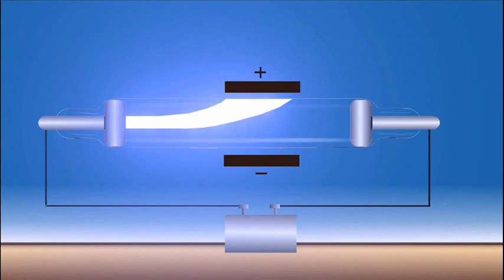When an electric field is produced near the cathode ray tube, the cathode ray gets deflected because it gets attracted towards the positive charge.